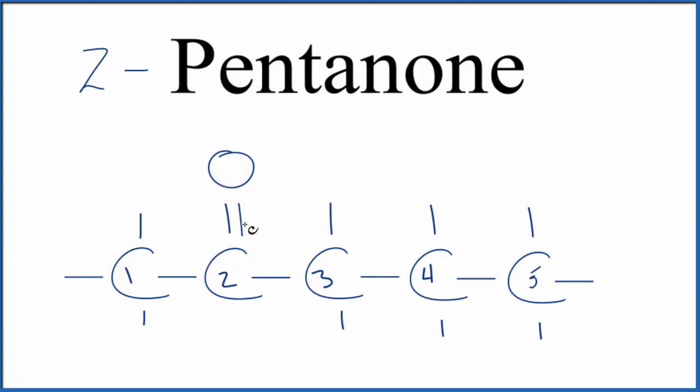As you might imagine, we could move this over here to the third carbon. And let's move this here and one of these here. So each carbon has four bonds. And this would be called three pentanone. So you either have two or three pentanone.